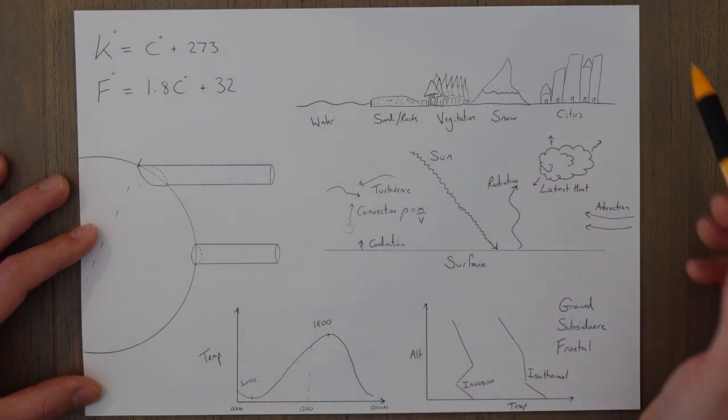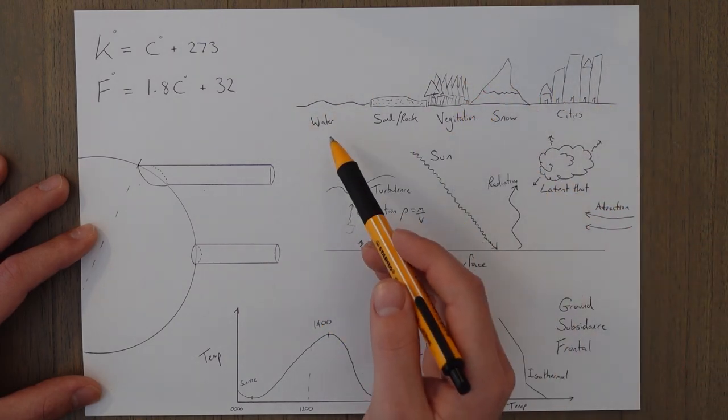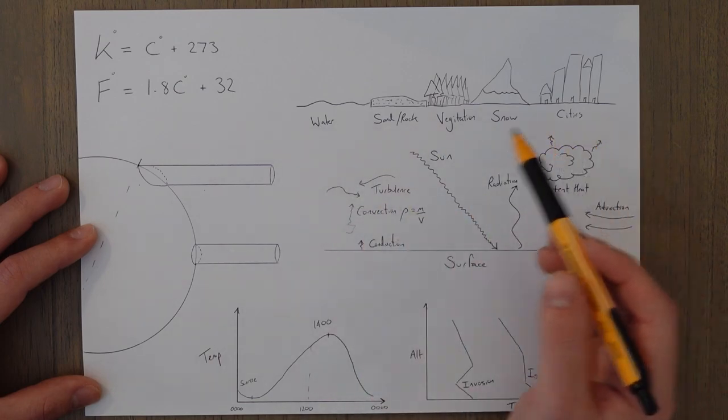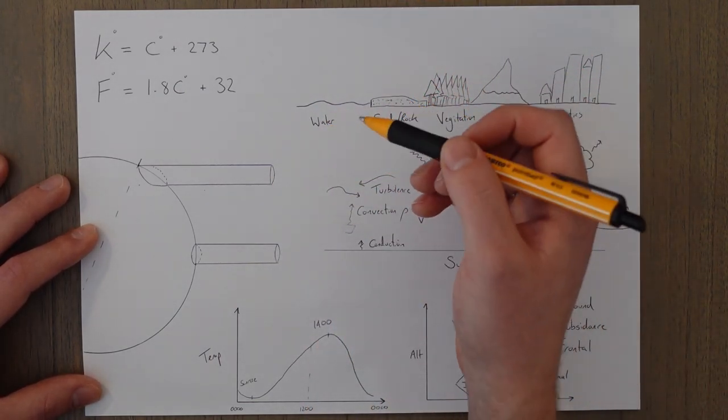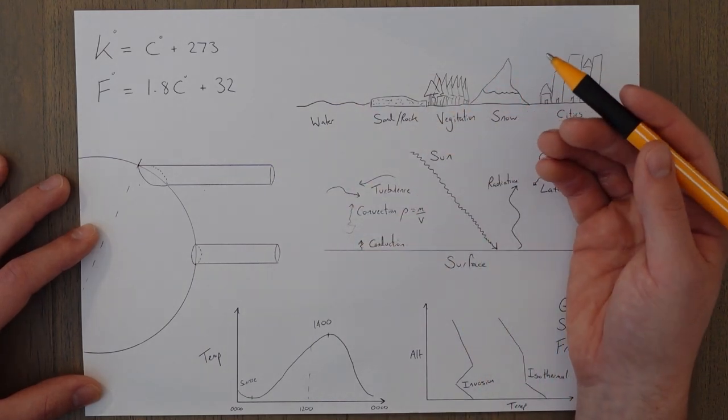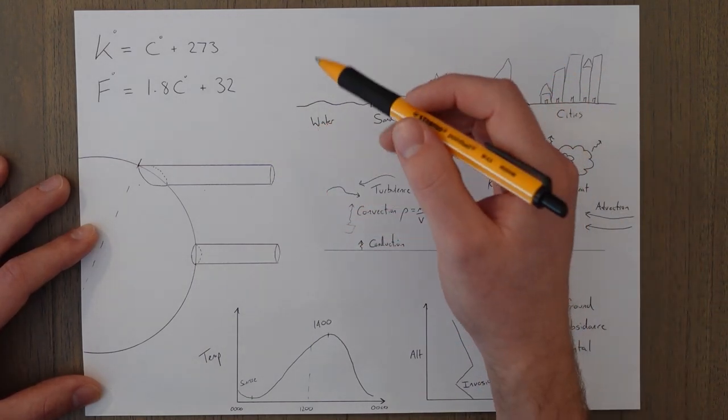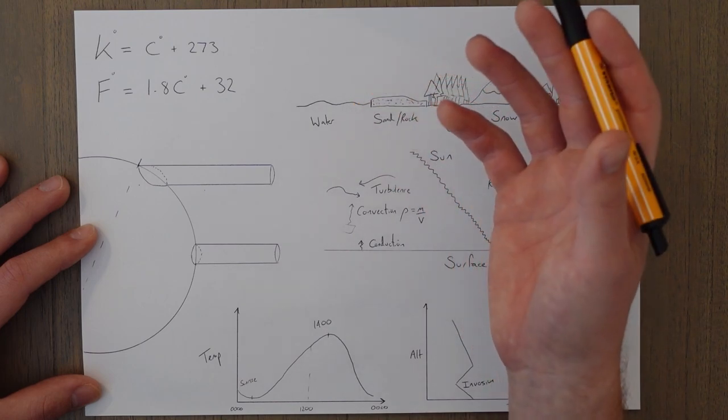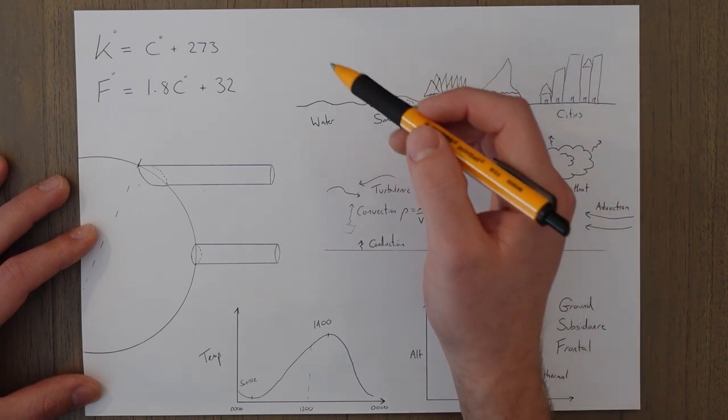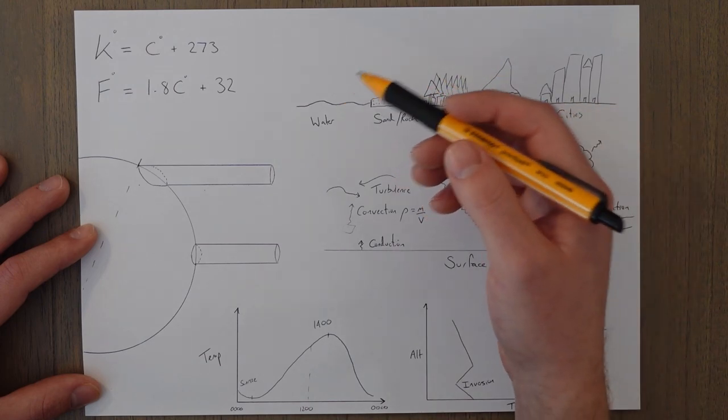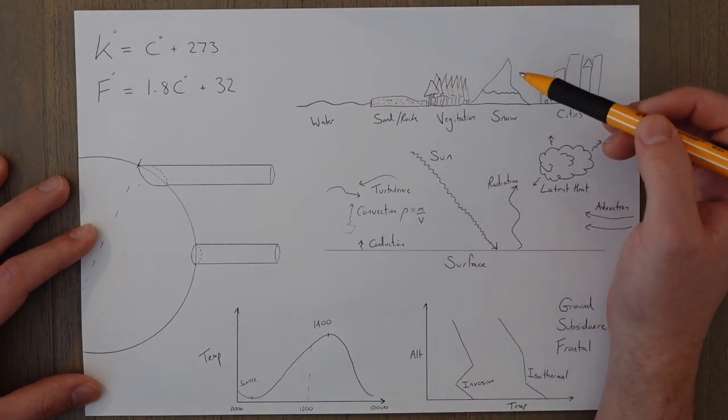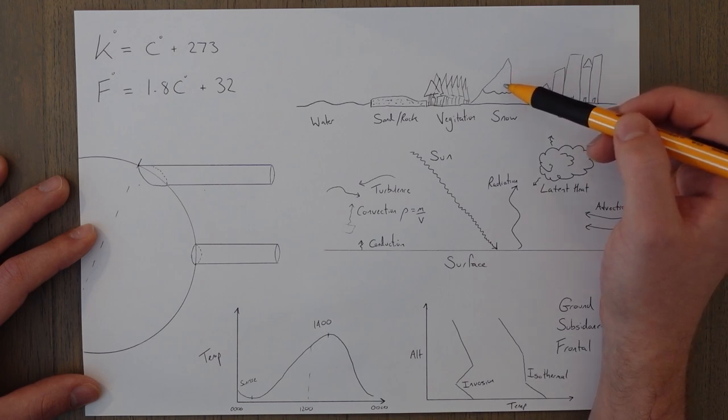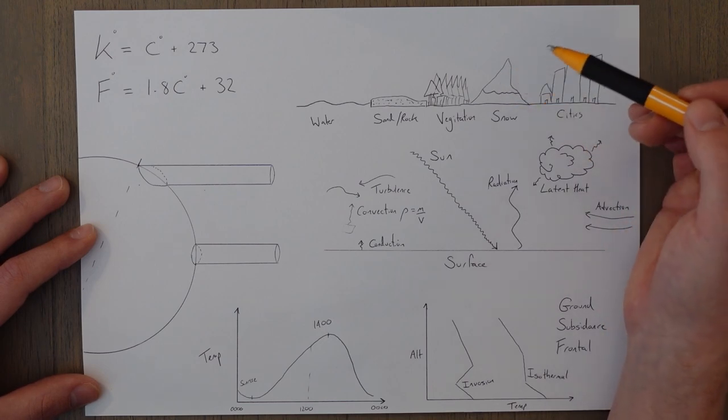The surface heats up depending on the type of material at the surface. Water doesn't heat up that much. It doesn't change that much in temperature throughout the day, mainly because a lot of the light is reflected off. A lot of the UV rays are reflected off and also a lot of it's used in evaporation. A similar thing happens with snow. You get a lot reflected off and also get some used to melt and evaporate the snow.